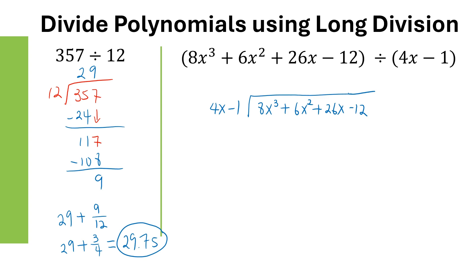Take the first term, 8X cubed, and divide it by 4X. 8 divided by 4 is 2, and when you divide you subtract the exponents, so X cubed divided by X gives X squared. Then multiply 2X squared by 4X minus 1, giving 8X cubed minus 2X squared.